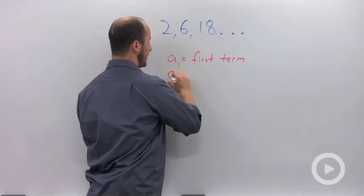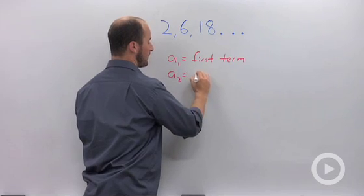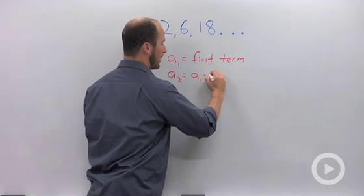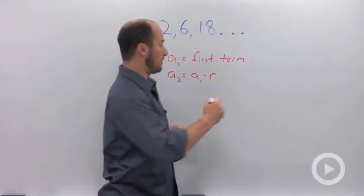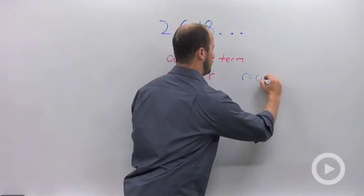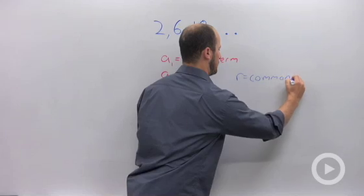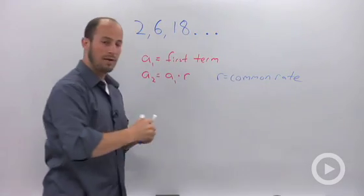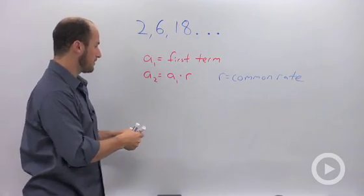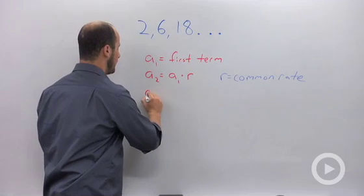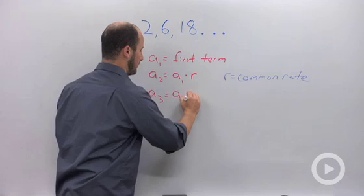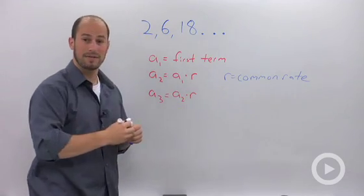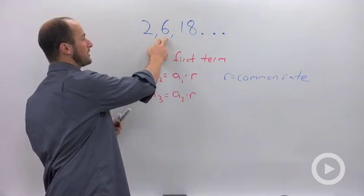In order to find the second term, we take that first term and multiply it by that common rate, which we call R. To find the third term, we take the second term and multiply it by the rate as well. We went from 2 to 6, then from 6 to 18, again multiplying by that common rate 3.